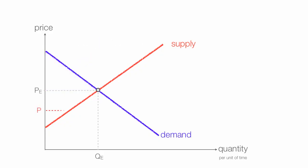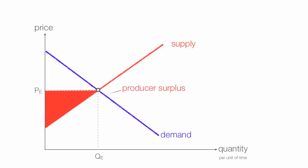The same is true with suppliers. Many suppliers are willing to take a lower price, but they don't have to because they can take the equilibrium price, which is higher. So they benefit. The area below the price and above the supply curve is known as the producer surplus.